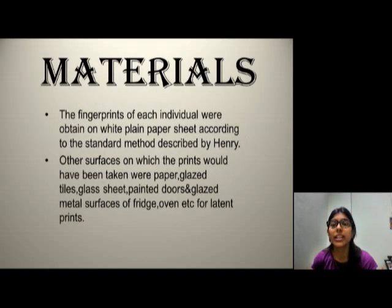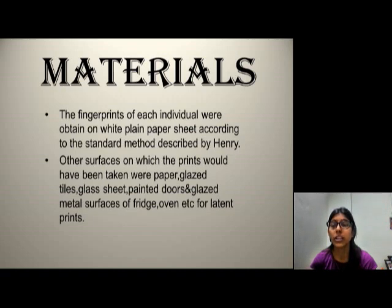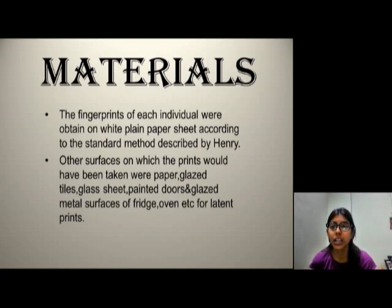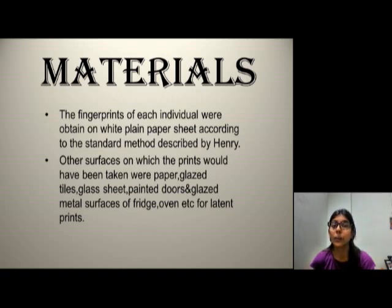Now we will discuss the materials needed to develop fingerprints. The fingerprints of each individual were obtained on white plain paper sheet according to the standard method developed by Henry. Other surfaces on which prints were taken include paper, glazed tiles, glass sheet, painted doors, and glass metal surfaces of fridge, oven, etc., for latent prints.